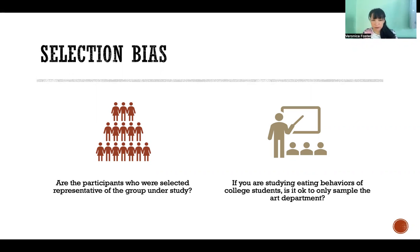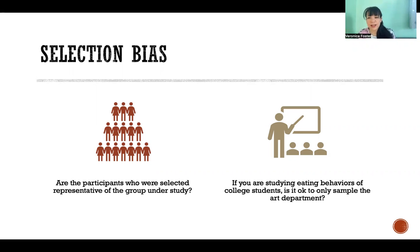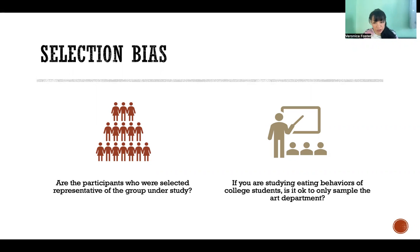Similarly, if we only look at students who are on the football team, or we only look at freshmen, or we only look at students who are in a certain class, then that's not going to be representative of the entire college student population. And that's what we mean by selection bias.